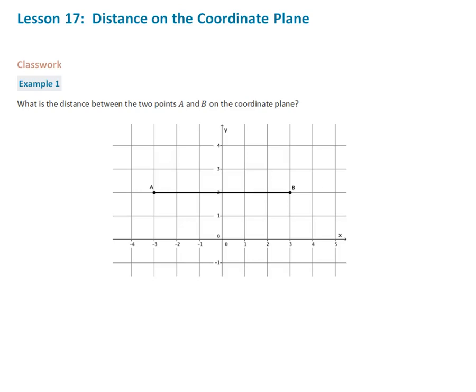In this problem, we are going to talk about finding how far it is from A to B. In this first one, I think you can figure out how far it is from A to B pretty quickly. We can go ahead and just count the units from A to B because it's a horizontal line. We can just say it's 1, 2, 3, 4, 5, 6 units across. So we know that in this case, it's going to be 6 units.